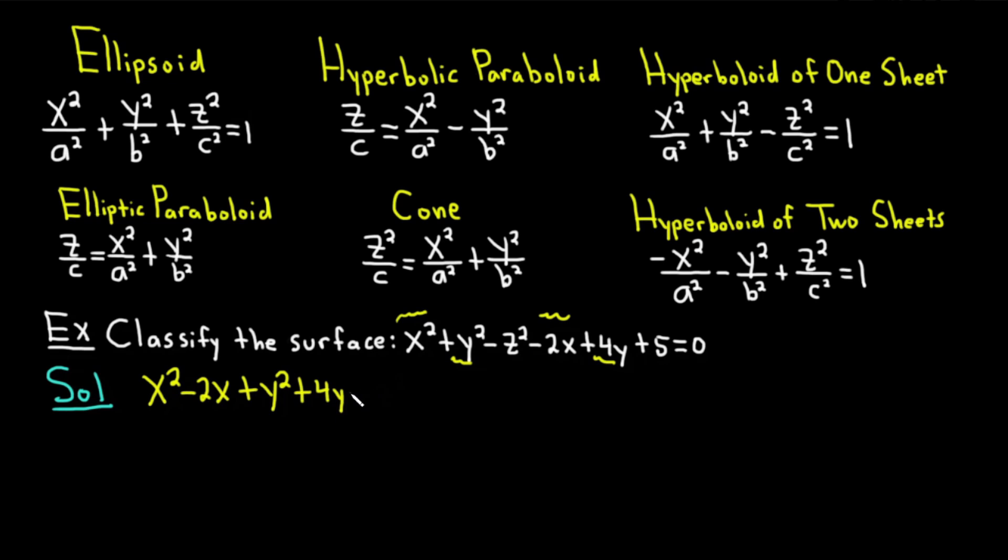And then we've got the minus z squared, which hangs out. So minus z squared. And this plus 5, let's subtract it over to the other side. So this is equal to negative 5.